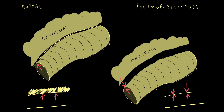When you've got a pneumoperitoneum, you get gas interposed between the omentum and the bowel — in other words, gas on both sides of the bowel wall. This is represented by not just an interface on one side, but an interface on both sides, so you can see both sides of the bowel wall. This is the basis of Rigler's sign.